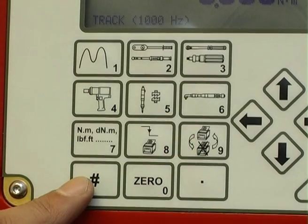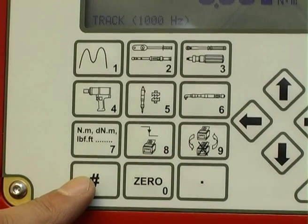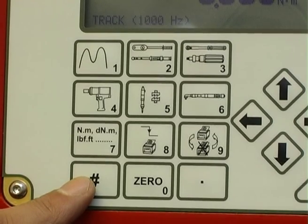The hash button displays full details of the selected transducer, the capacity, serial number, and measurement units.